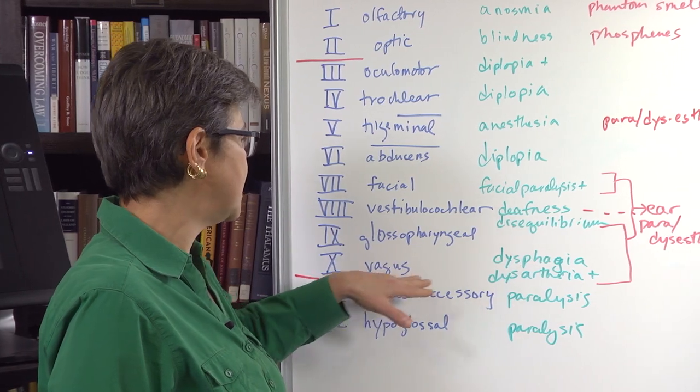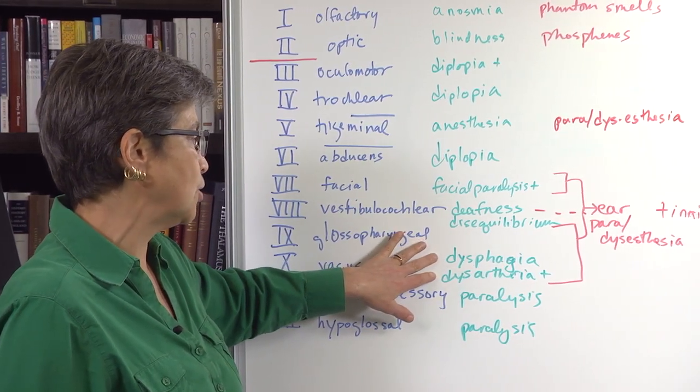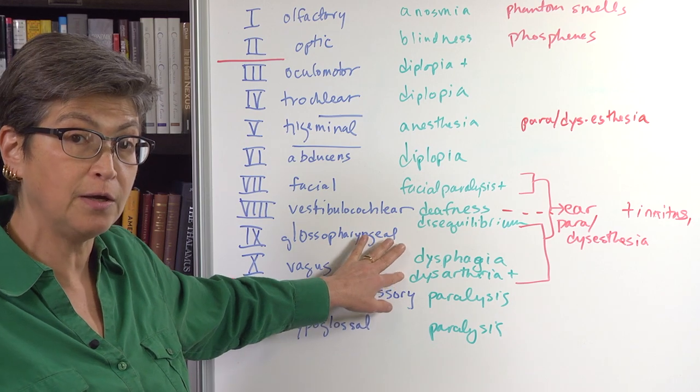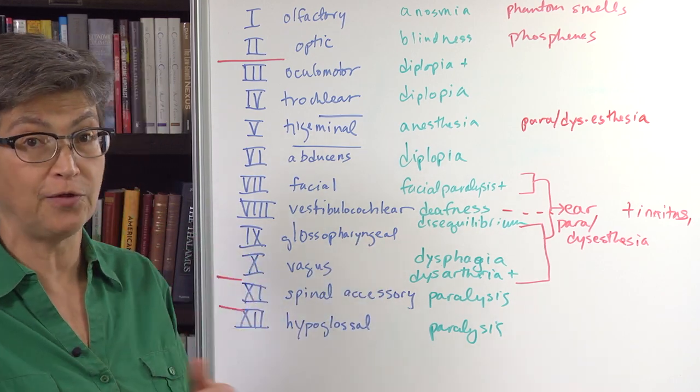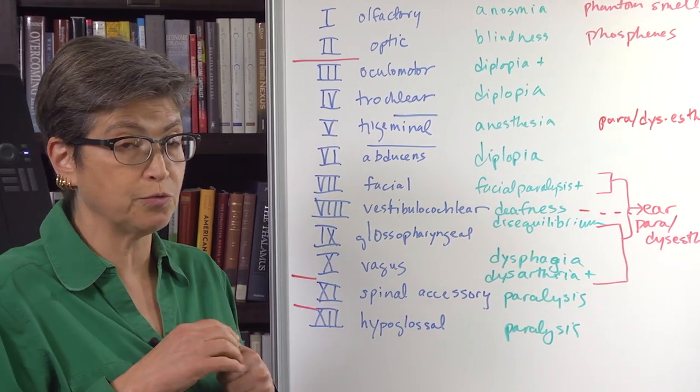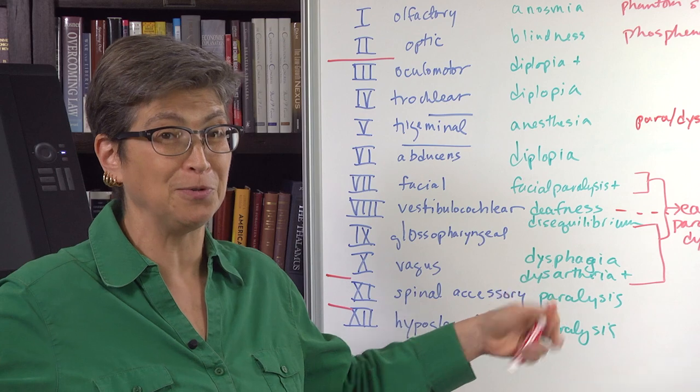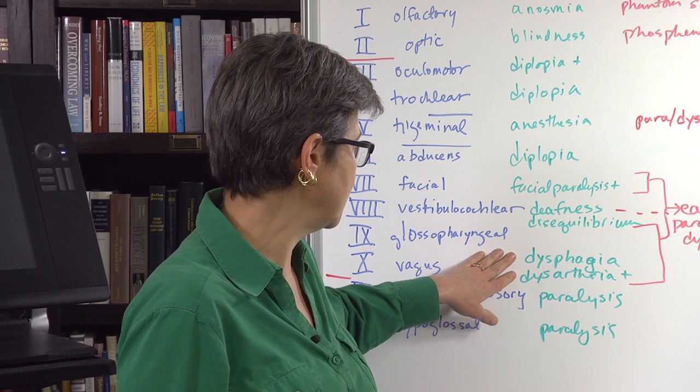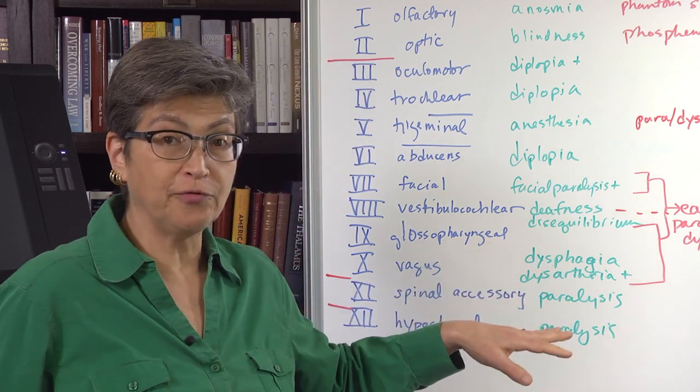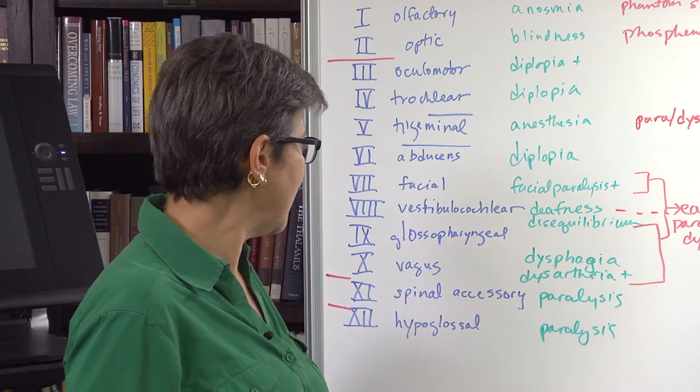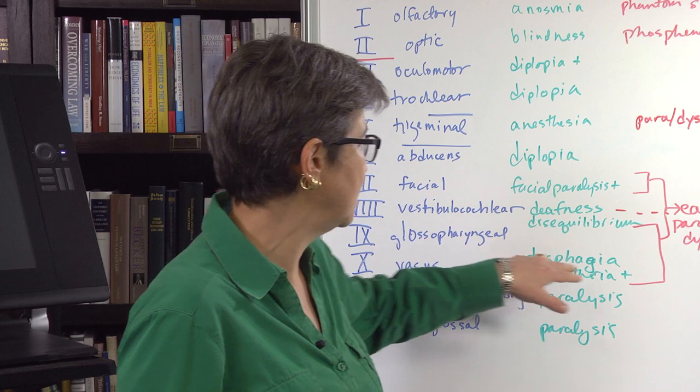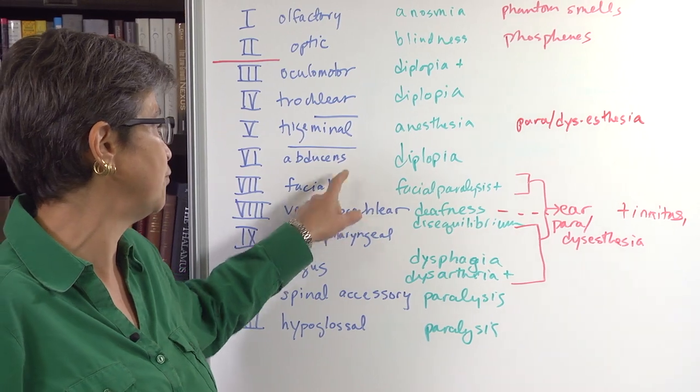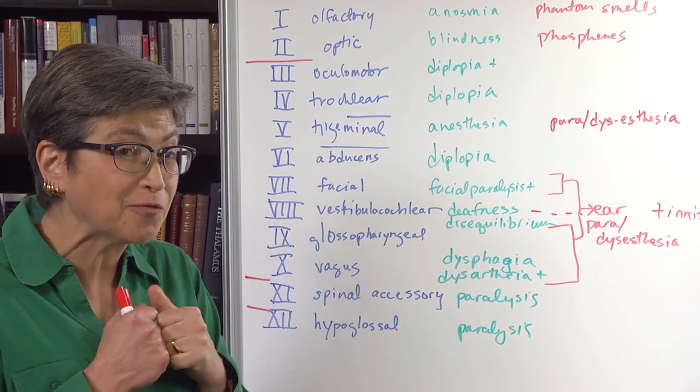Once we get to the glossopharyngeal and the vagus, the two big problems that people are going to notice are difficulty swallowing, which is called dysphagia, difficulty talking dysarthria. They're also going to have, they might have a problem with gag reflex, but it's important to remember that about 30% of healthy people don't have a gag reflex. So it's not particularly diagnostic. They also will have a problem with the cough reflex, which is more critical. And with the glossopharyngeal or the vagus, there are also going to be these paresthesias or dysesthesias from the ear, just as was true for the facial, because both of these nerves carry a little bit of somatosensory information from the ear.